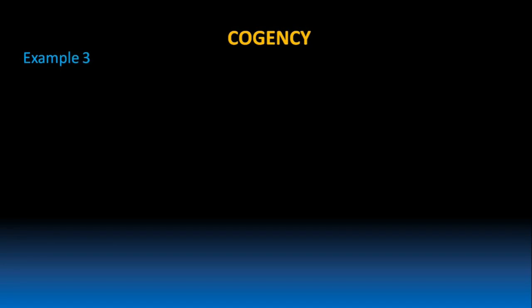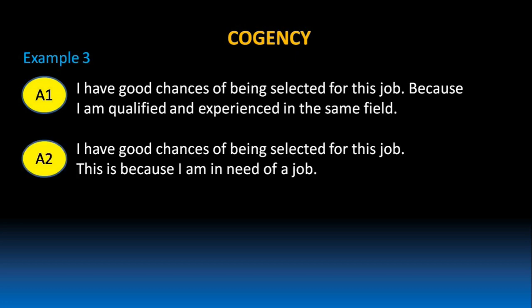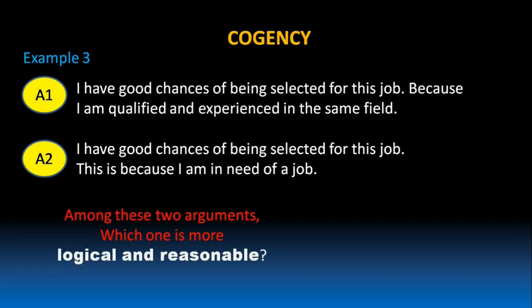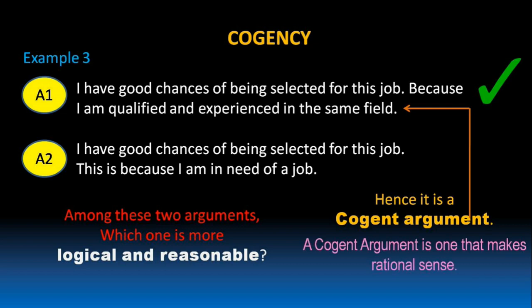Let's take one more example. Argument 1: I have good chances of being selected for this job because I am qualified and experienced in the same field. Argument 2: I have good chances of being selected for this job because I am in need of a job. Among these two arguments, which one is more logical and reasonable? Argument 1 is more logical and reasonable, because the one who is qualified and experienced in the same field has got more chances of getting a job than the one who is simply in need of a job. Hence, it is a cogent argument. A cogent argument is one that makes rational sense.